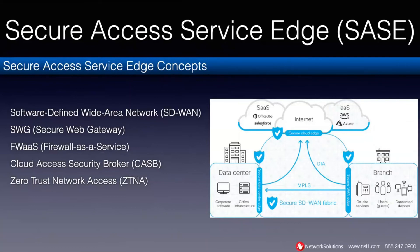The components include: Software-Defined Wide Area Network, or SD-WAN; Secure Web Gateway, which is essentially a proxy server that many of you are already familiar with; Firewall as a Service; Cloud Access Security Broker; and Zero Trust Network Access. We'll talk about each of these in detail.